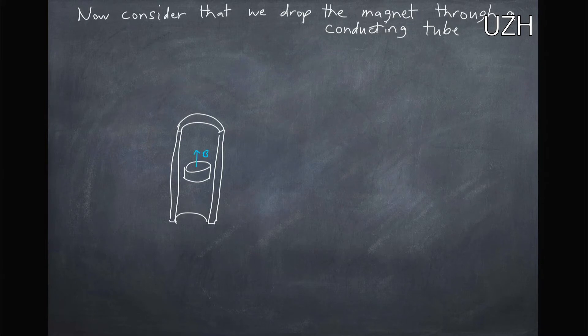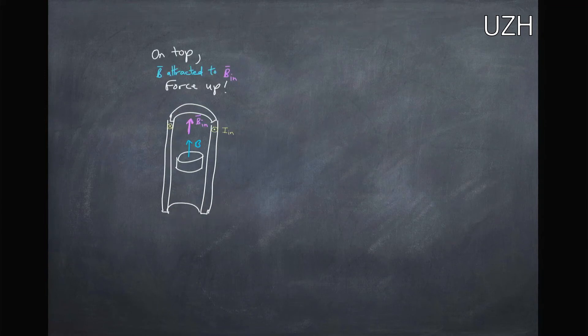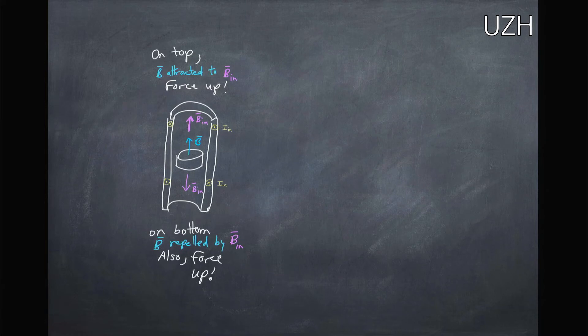So now let's consider that we have a magnet that we're dropping through an electrically conducting tube. This is a cross-section of this tube. On top we're going to have a force pointing up—we're attracted to the current loops above. On the bottom we're going to have our magnet repelled from the opposite magnetic induced field caused from the currents moving in the opposite direction. So that's also a force up.